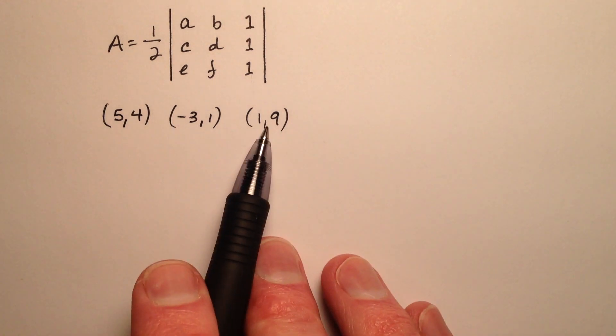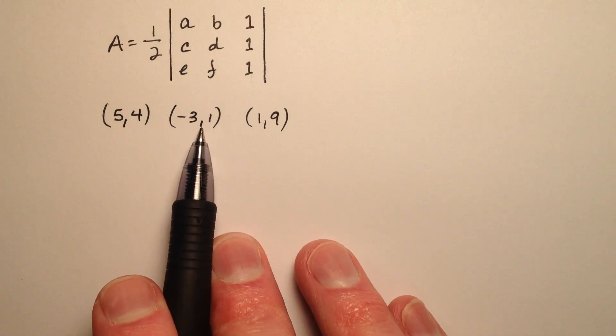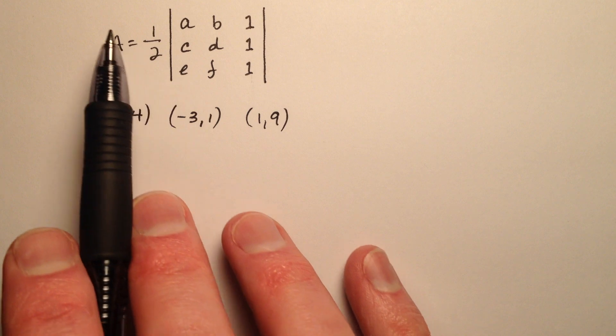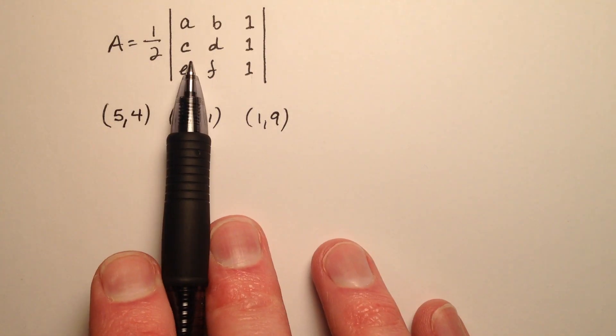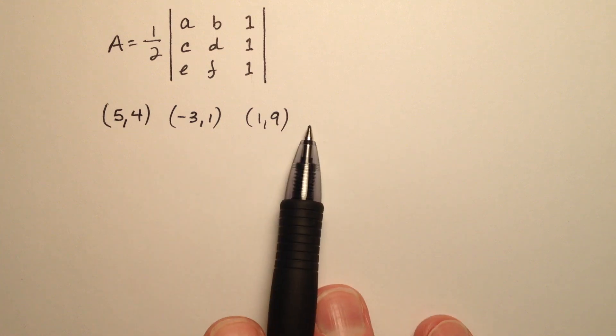Here in this example, I have a triangle with vertices (5,4), (-3,1), and (1,9). And we want to use our formula to find the area of a triangle in the coordinate plane using determinants in order to find the area of this triangle.